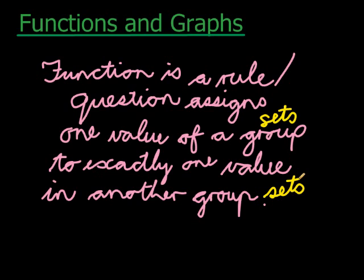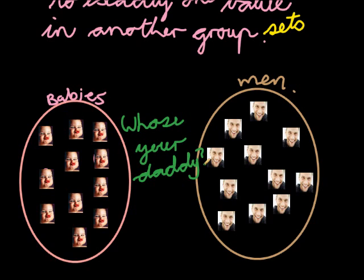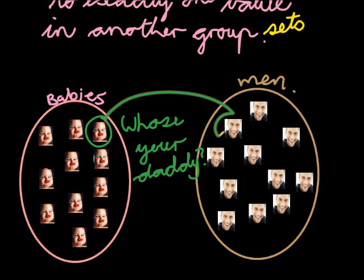We're not going to look at values, but let's look at the following example. We have two groups: a group of babies and a group of men. We want to connect the baby with his dad. So the question, or the rule, is: who's your daddy? With that rule, we can now assign. We go to a baby — assuming the baby can speak — we ask the baby, who's your daddy? And he might say, well, that guy's my dad.